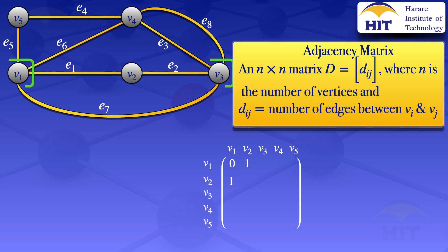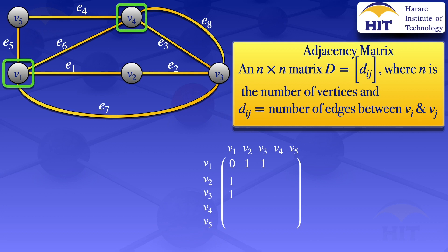Between v1 and v3, there is one edge, e7, so we put a one at v1,v3 and also at v3,v1. Between v1 and v4, there is one edge, e6, so we put a one at v1,v4 and also at v4,v1.